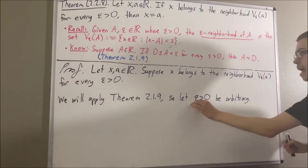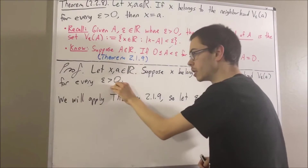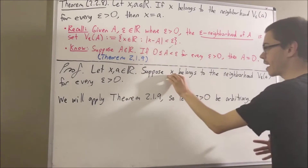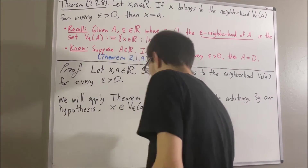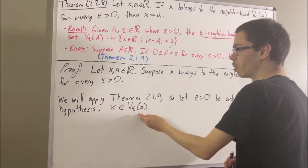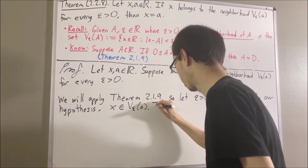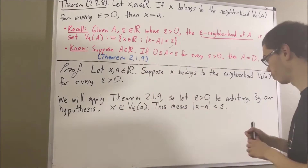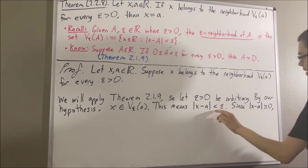Since epsilon is greater than zero, and we know that the hypothesis holds for every positive real number, it must hold for the epsilon we just introduced. So we can be sure that x is an element of the epsilon neighborhood of a. By definition, this means the absolute value of x minus a is less than epsilon. And since the absolute value of any number is greater than or equal to zero, we have that zero is less than or equal to the absolute value of x minus a, which is less than epsilon.